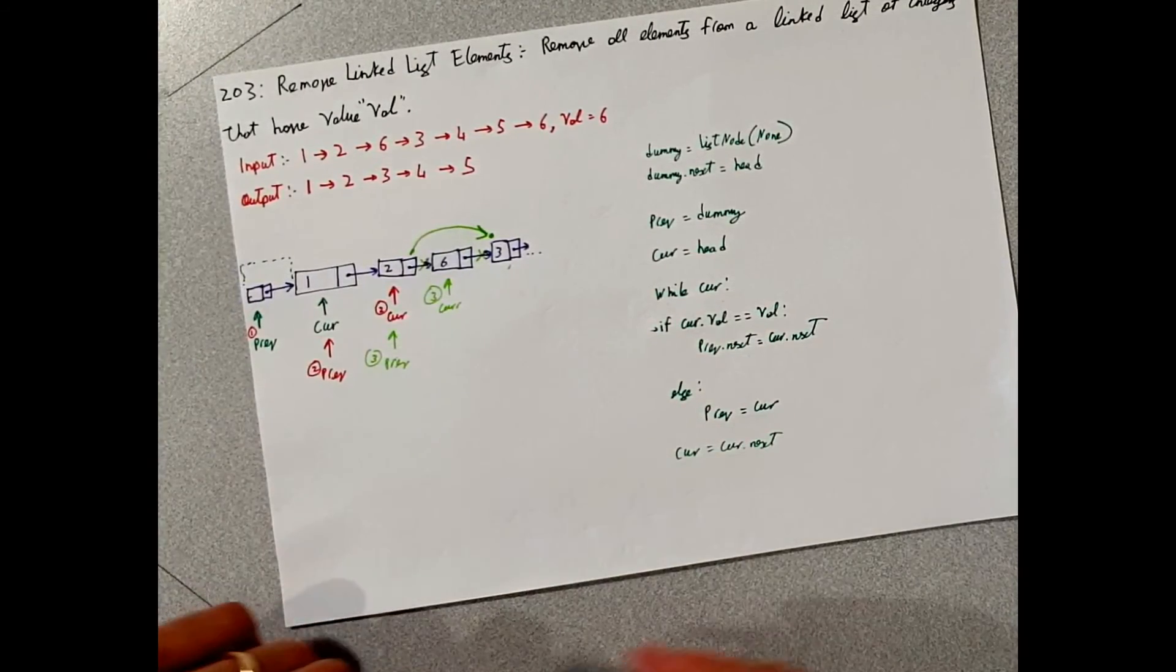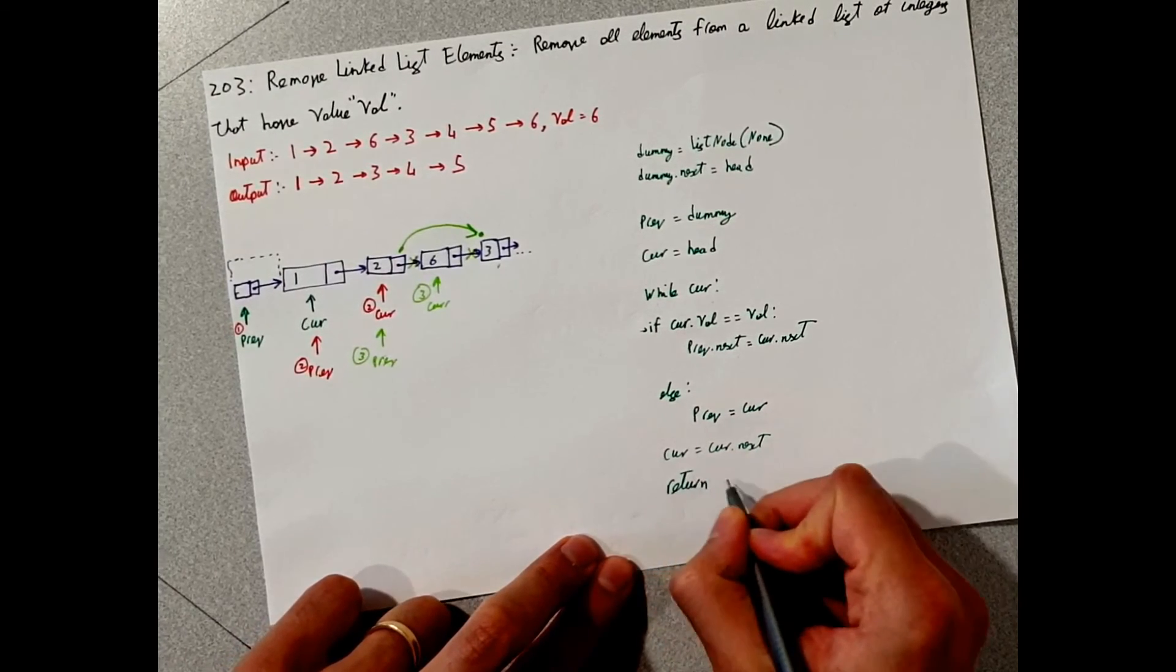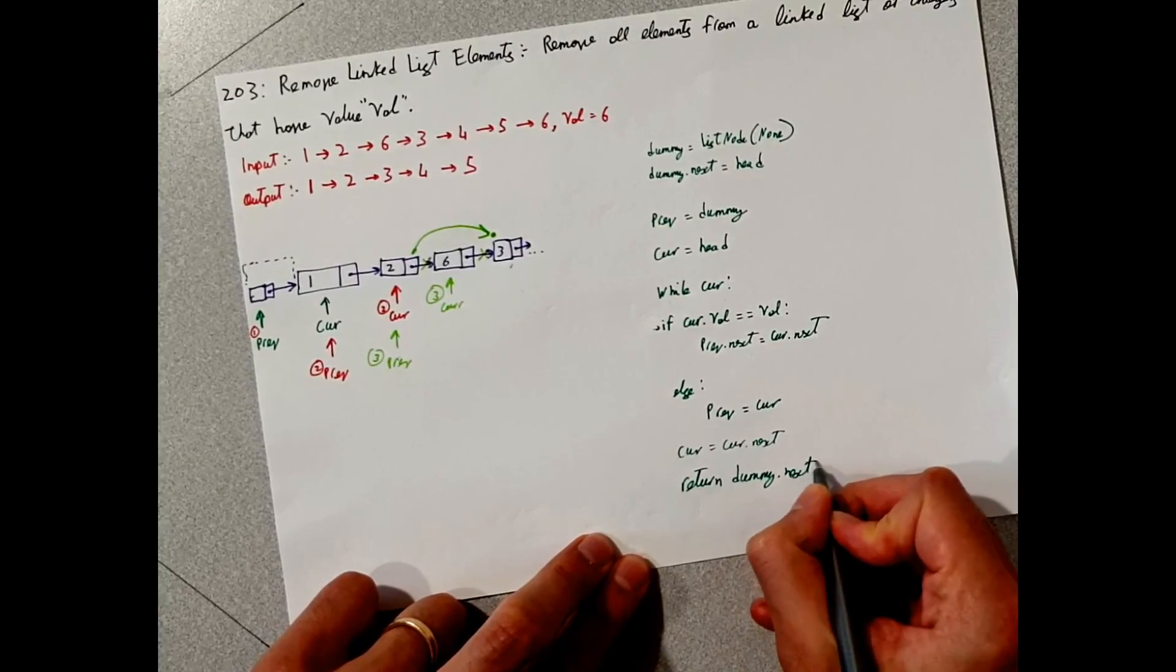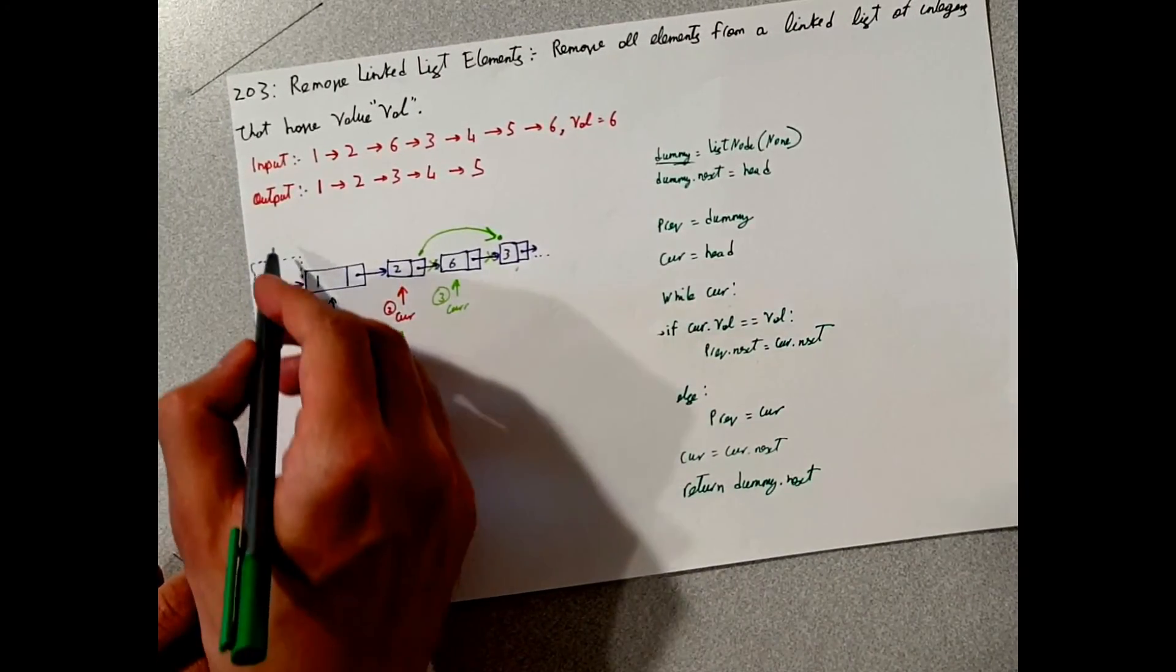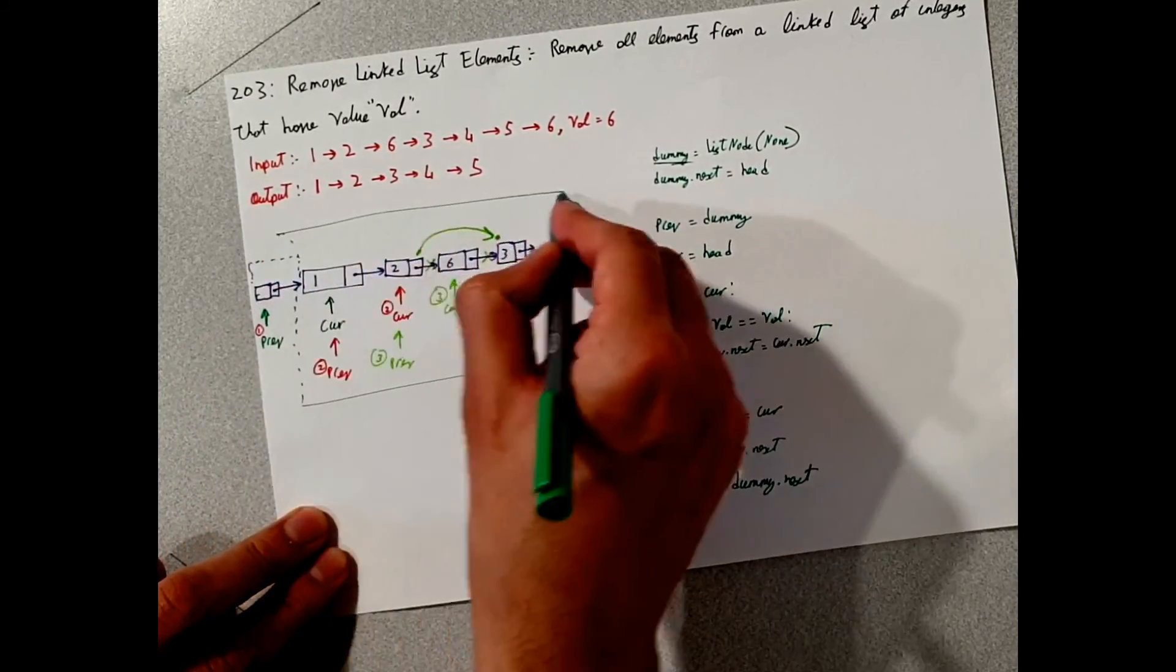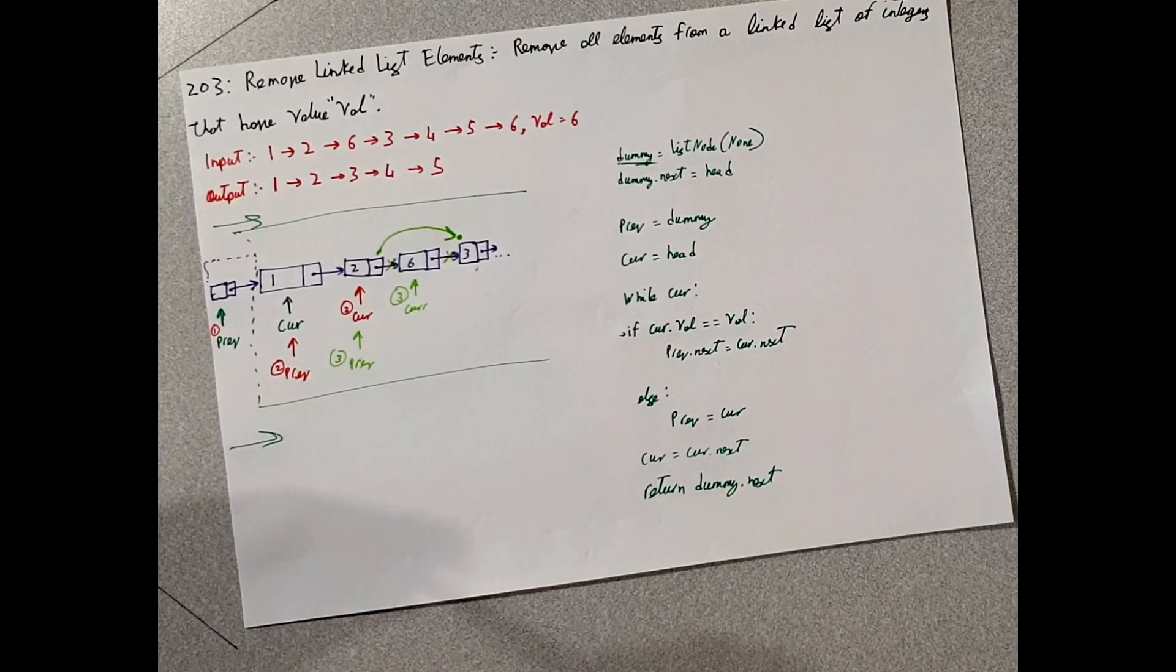And we have to return something at the end of the function. So we will return dummy.next. And our dummy is here and dummy.next is here. So we're basically returning everything here. Thank you for watching. If you have any questions, please feel free to write them down.